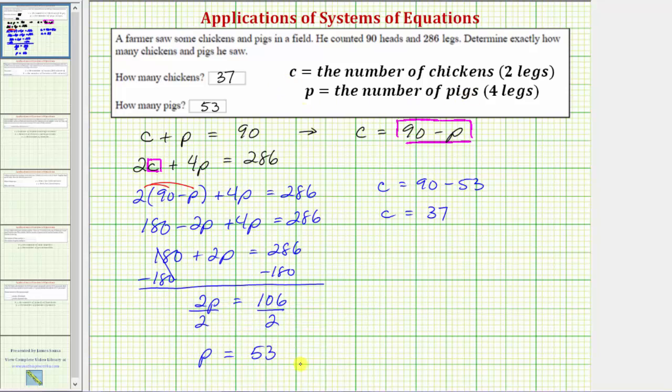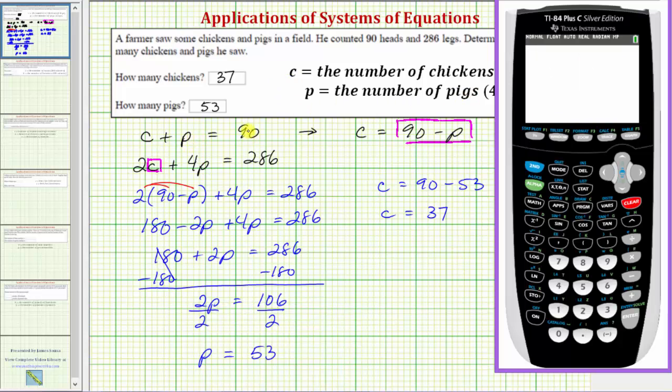To verify this is correct, c plus p must equal 90, and notice that 37 plus 53 is 90, and also 2 times c, or 2 times 37, plus 4 times p, or 4 times 53, must equal 286. And notice how it does. So this verifies our solution is correct.